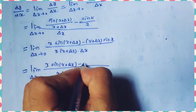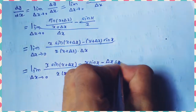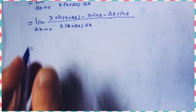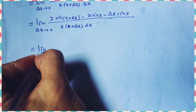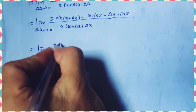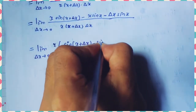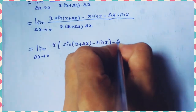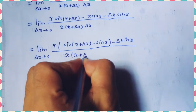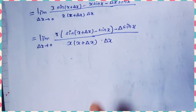Taking the LCM of the two ratios x and (x + δx), we get lim(δx→0) of [x·sin(x + δx) − (x + δx)·sin(x)] divided by x(x + δx)·δx.